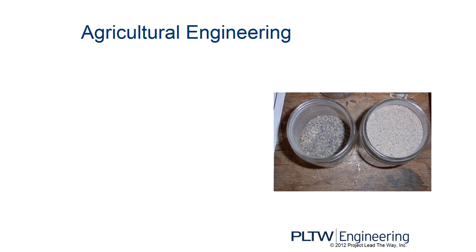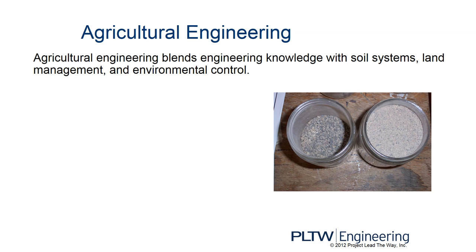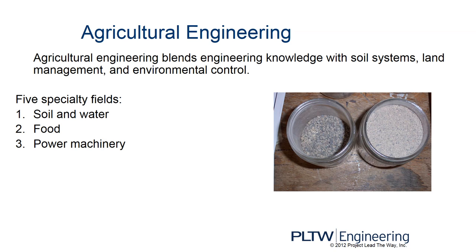Agricultural engineering blends engineering knowledge with soil systems, land management, and environmental control. Here in Kentucky, the University of Kentucky has an agricultural engineering program. There are five specialty fields: soil and water, food, power machinery, structures, and electric power generation — not for a large dam, but for a farm. For example, you can capture manure, and the methane produced by decomposition can be used to drive a turbine to generate electricity.